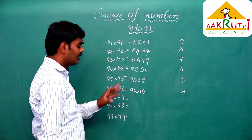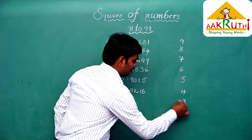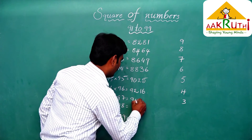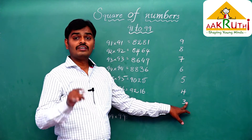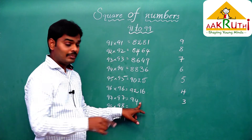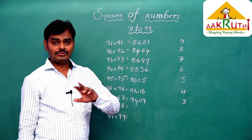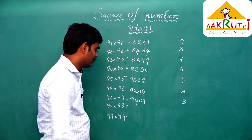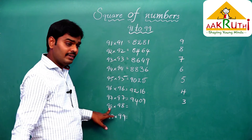Now 97: 97 is 100 minus 3. So the first step is 97 minus 3, which is 94. The second step is 3 squared, which is 9. Because the square of a 2-digit by 2-digit number is a 4-digit number, write 09. So 97 squared equals 9409.